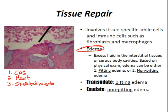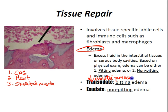Edema is excess fluid in the interstitial tissues or serous body cavities. It can be classified as pitting or non-pitting edema. A transudate — think pitting edema — is caused by decreased oncotic pressure, as in nephrotic syndrome or liver failure, or by increased hydrostatic pressure, as in congestive heart failure. Oncotic pressure is the force exerted by proteins like albumin in blood vessels to retain water within the vessel.